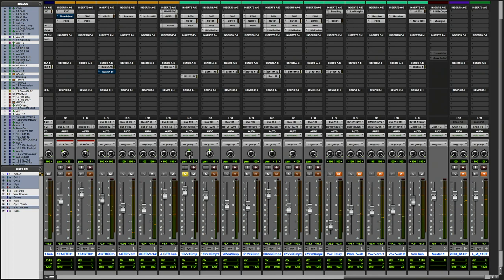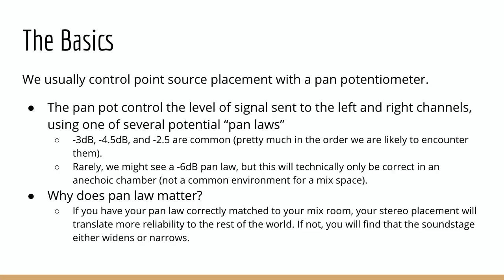From very early on, the engineers designing consoles and setting up panning buses — once we got to a continuous panning system — realized it was important to attenuate the signal going to the left and right when we were in the center. So the question is: how much should we attenuate? The amount that we attenuate is called the pan law for the potentiometer. In hardware, this is built into the potentiometer itself — it's an aspect of how the resistance changes as we vary the pot. But in software, this is defined as a preference.